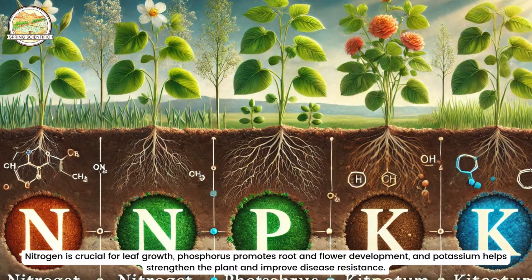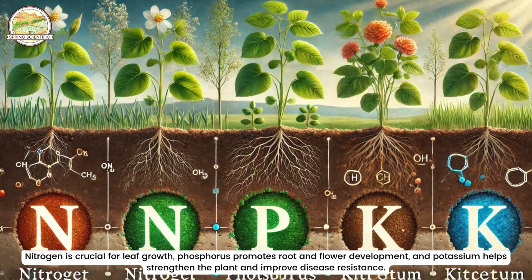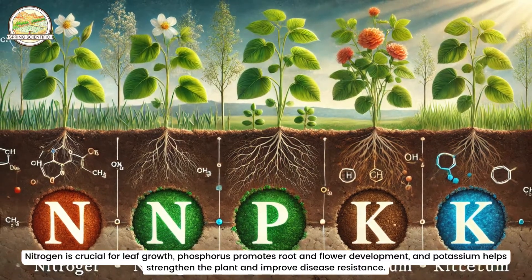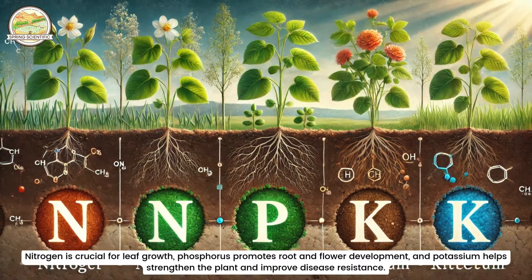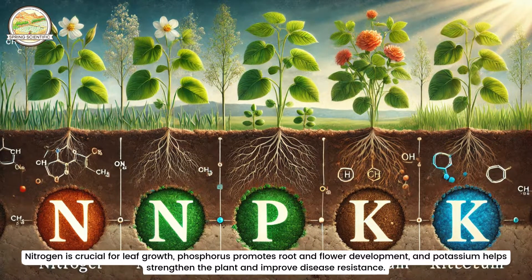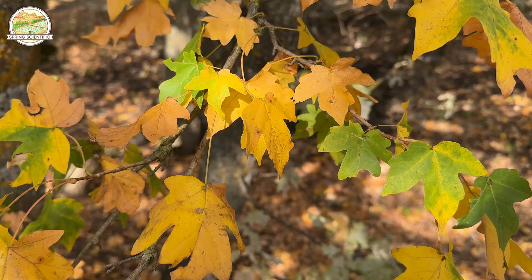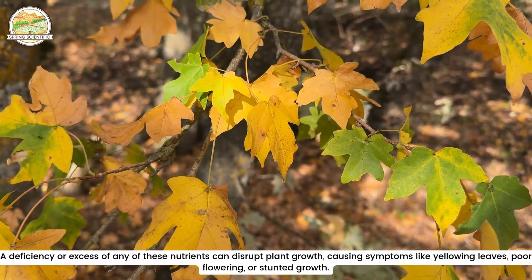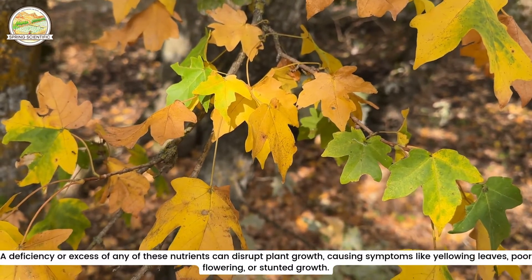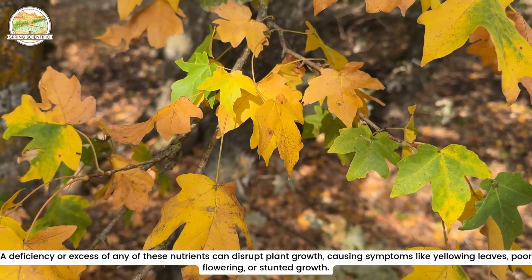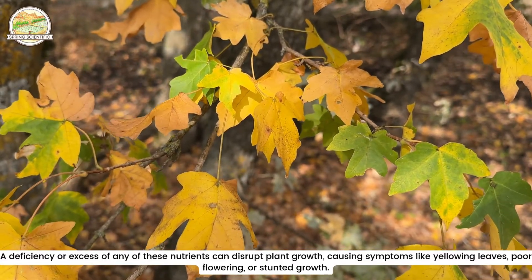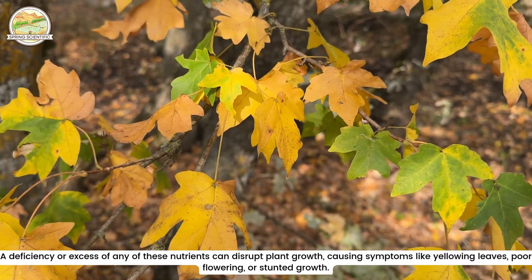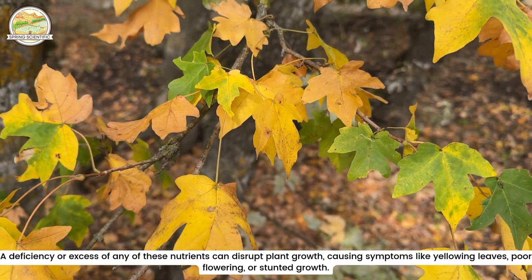Nitrogen is crucial for leaf growth. Phosphorus promotes root and flower development, and potassium helps strengthen the plant and improve disease resistance. A deficiency or excess of any of these nutrients can disrupt plant growth, causing symptoms like yellowing leaves, poor flowering, or stunted growth.